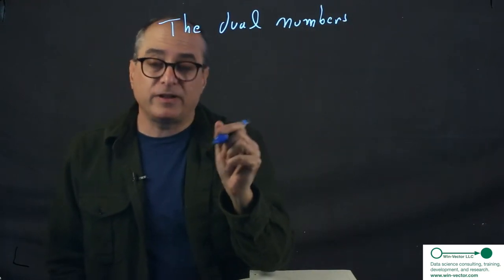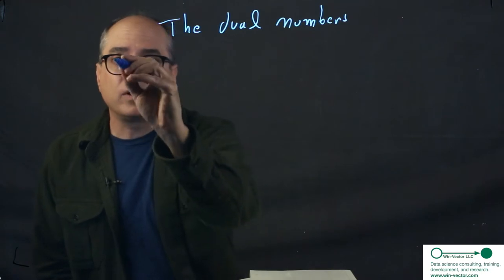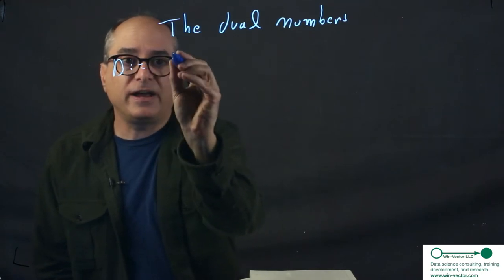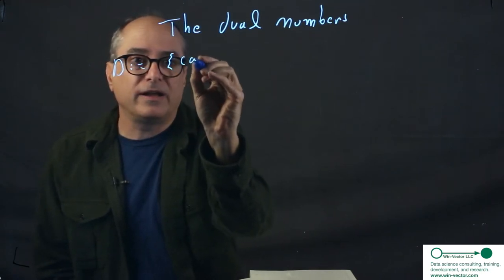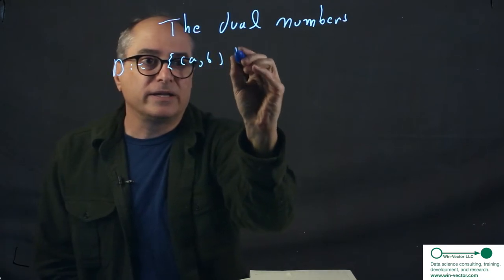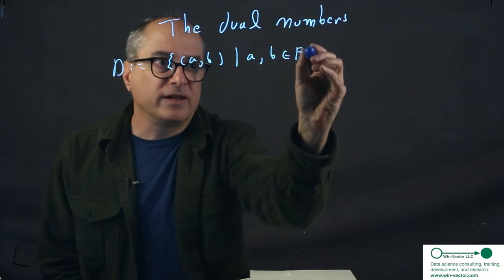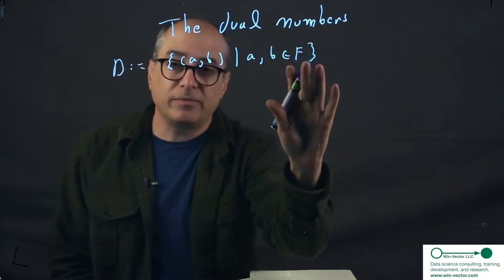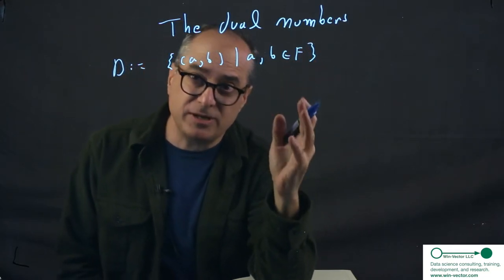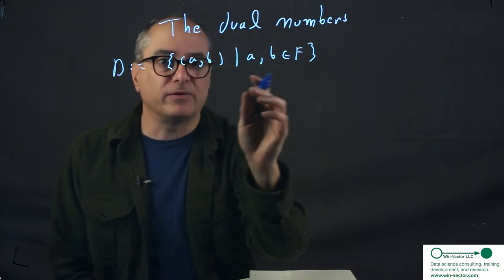The dual numbers actually have a fairly simple definition. We'll call D as all the pairs (a,b), given that a, b are in our field of choice. Now, that field could be the real numbers, or our kind of pseudo-approximation field, the machine double precision floating point numbers.